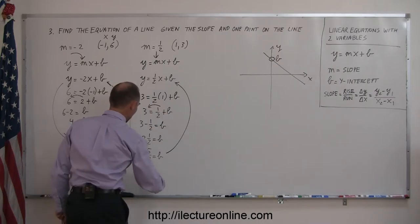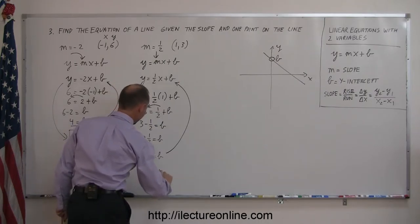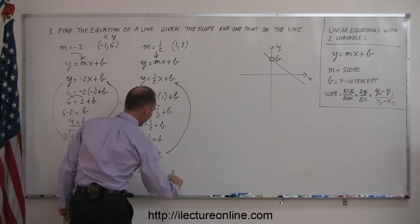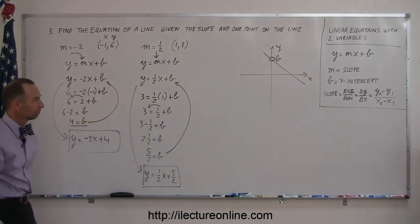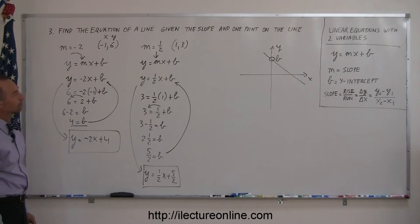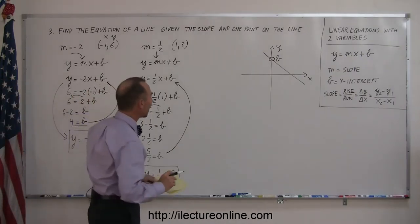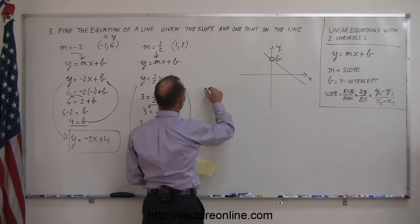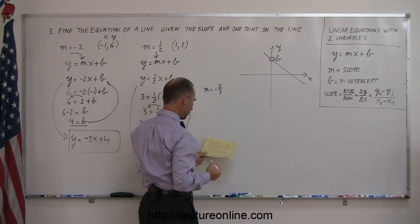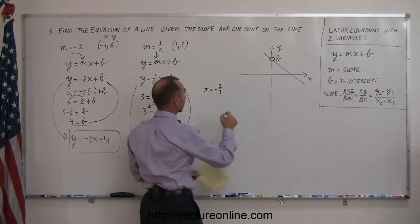And if we then plug that back into your equation right here, we can say, aha, y equals 1 half x plus 5 halves is the equation I'm looking for. Alright, let's do one more example so you feel comfortable with these types of problems. So we have, let's say, m equals minus 2 thirds, and the point 3 and 6.